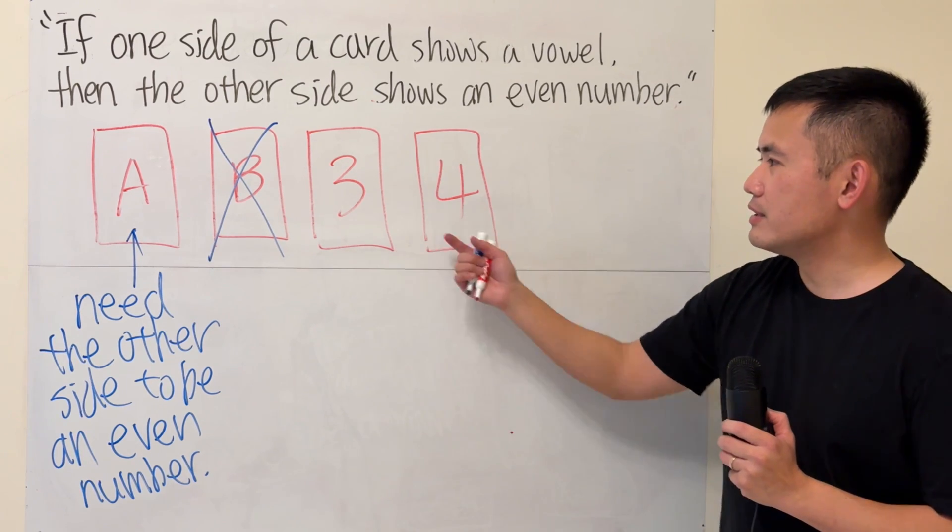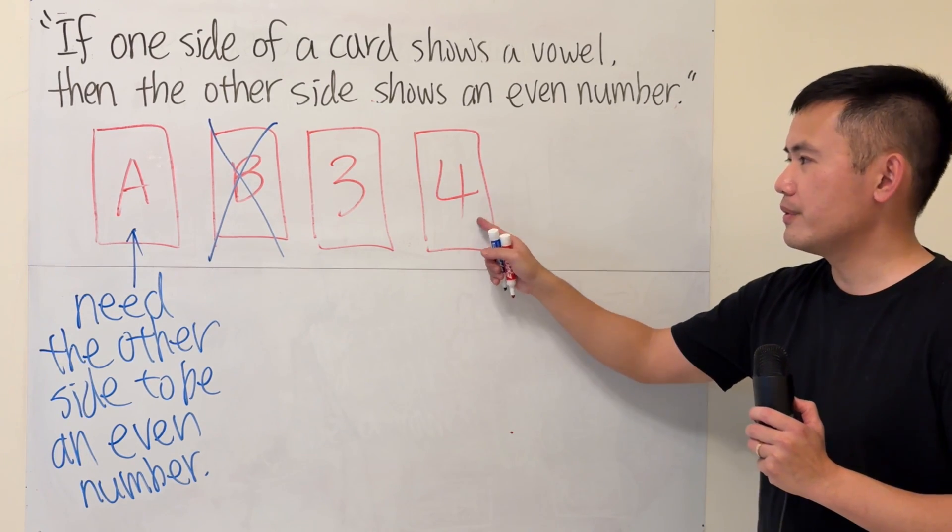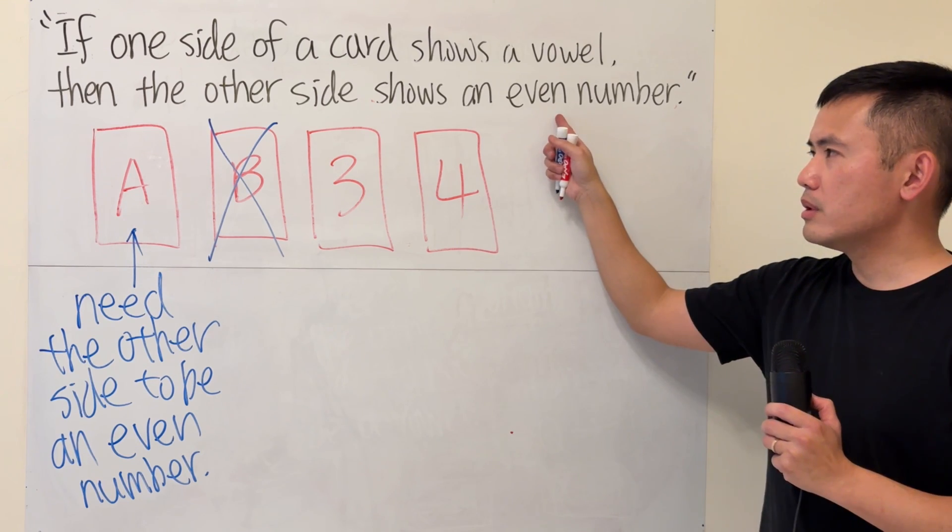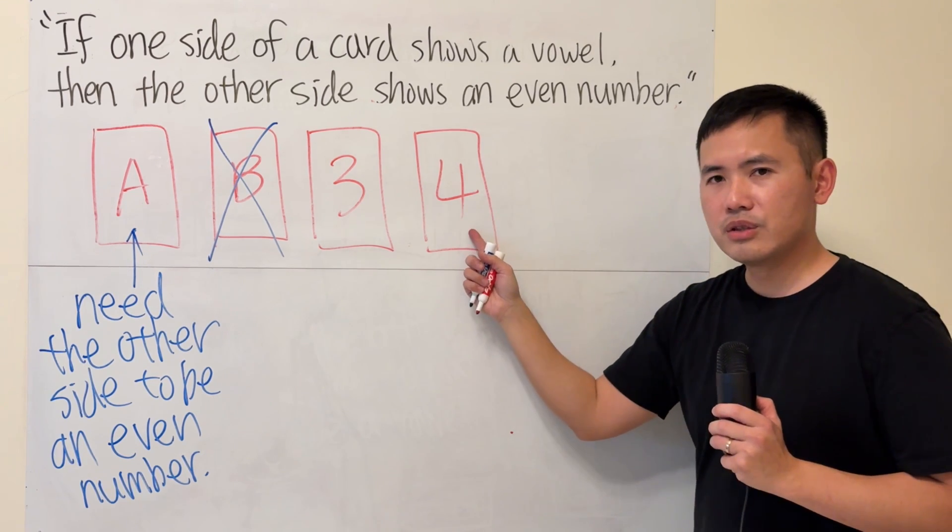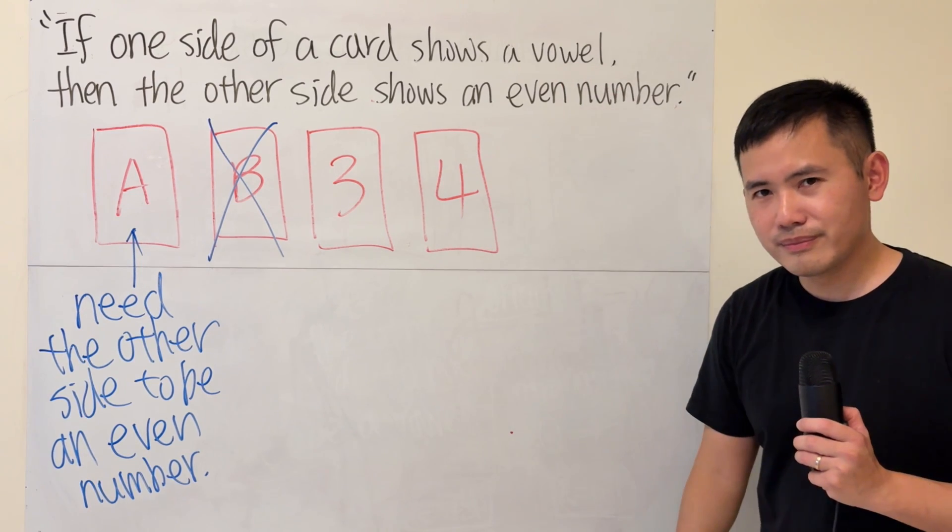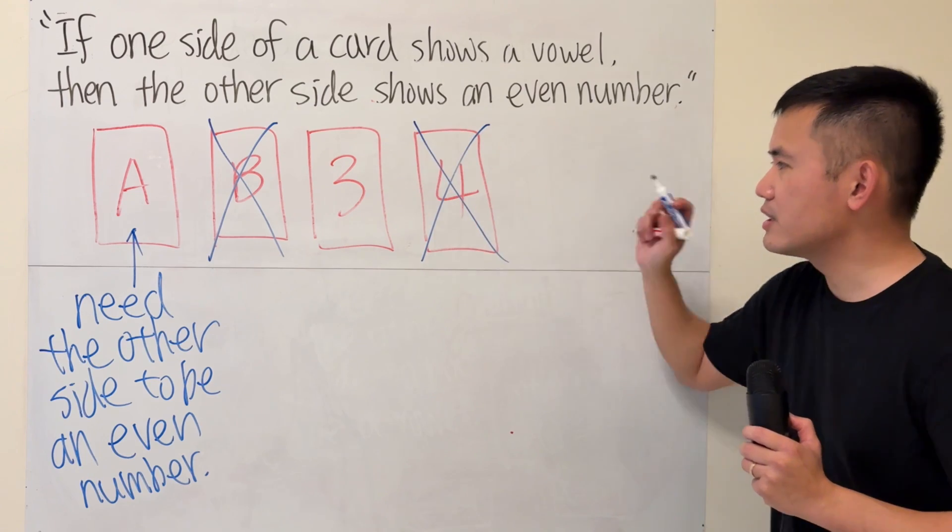Alright, now we have these two cards. Let's talk about the fourth one first. Four, it's an even number, so do you have to check this, to check that the other side shows you a vowel? The truth is, we don't.